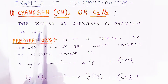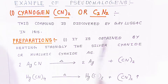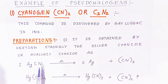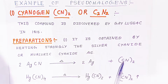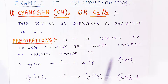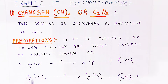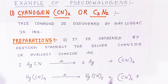How are we going to prepare cyanogen? The first preparation method: cyanogen is obtained by heating strongly silver cyanide or mercuric cyanide. When you heat silver cyanide, you get silver plus cyanogen. When you heat mercury cyanide, you get mercury plus cyanogen. This is a very simple preparation method.